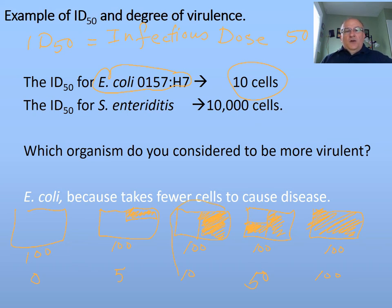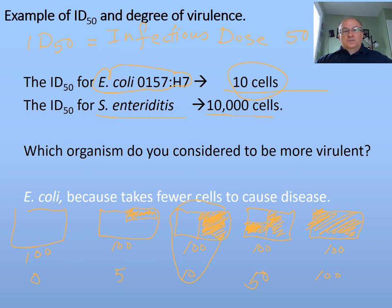ID50 is the ideal number scientists look for because it is more reproducible. Scientists have determined that the ID50 for E. coli O157:H7 is 10 pathogenic cells, compared to Salmonella enteriditis in which it takes 100,000 cells. So you can say that this particular strain of E. coli is a thousand times more virulent than Salmonella enteriditis. ID50 stands for Infectious Dose 50 — it is the amount of pathogens required to cause infection in 50% of the population being tested.